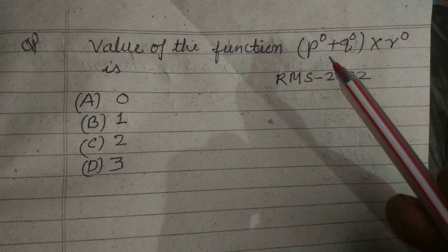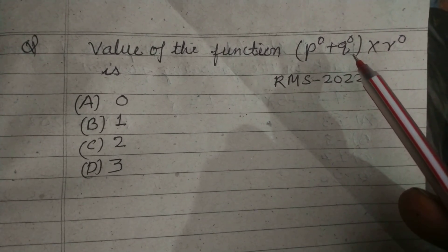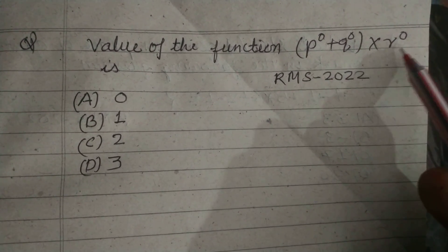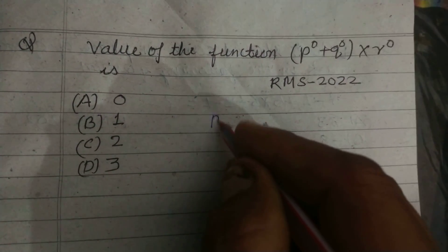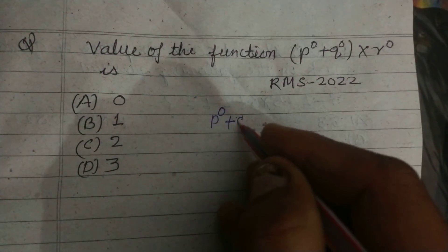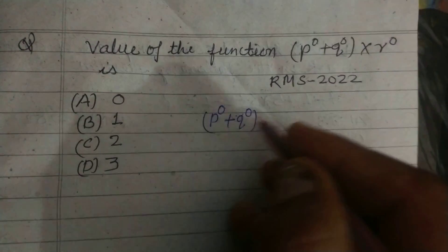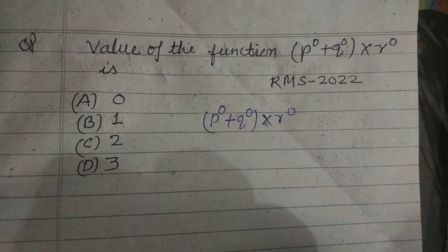Value of the function p to the power 0 plus q to the power 0, whole multiplied by r to the power 0. So here we write (p^0 + q^0) × r^0.